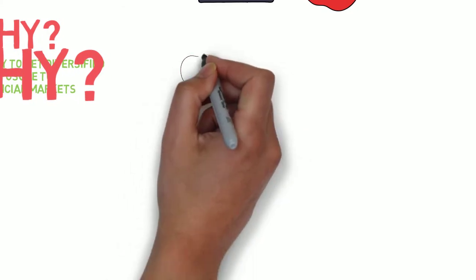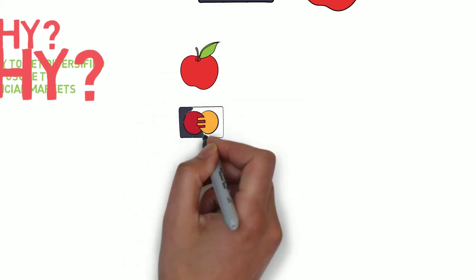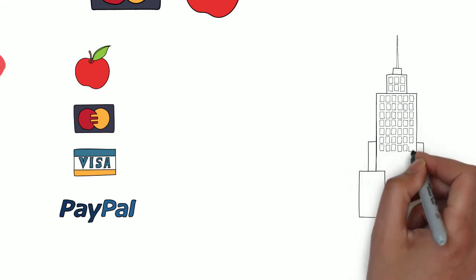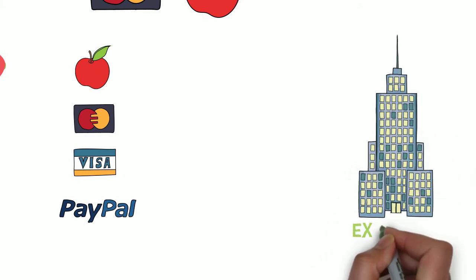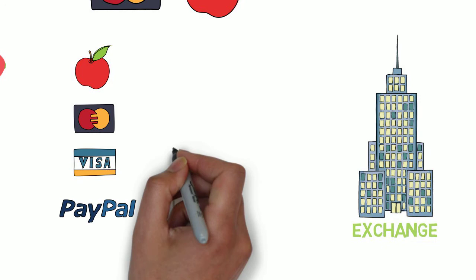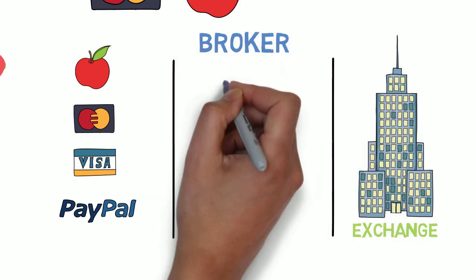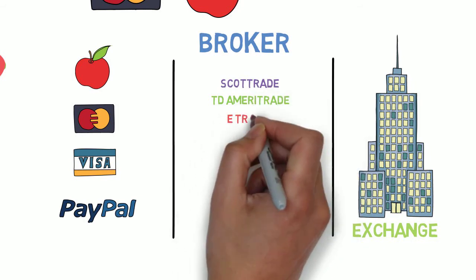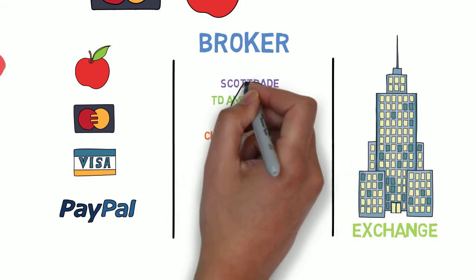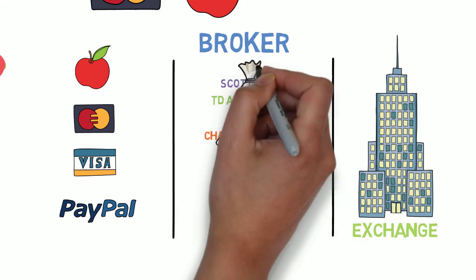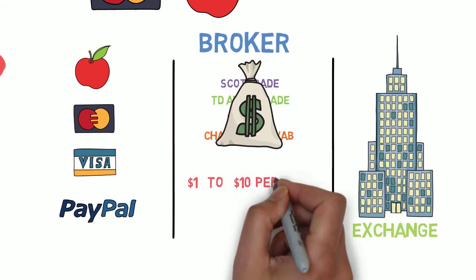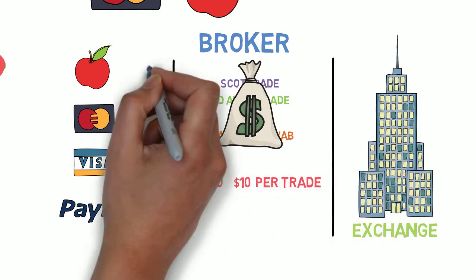Let's talk about what an ETF actually does and how the system works. You have these four stocks that are all part of the S&P 500, and then you have an exchange on the other end. But in between those two sides, you have a broker. What the broker does is help connect you to the exchange so that you can purchase your shares.